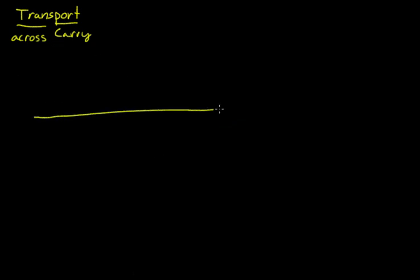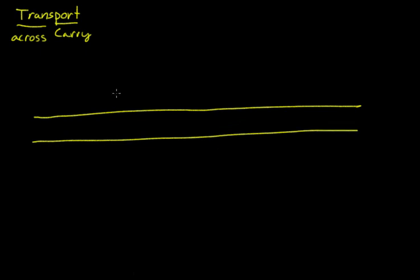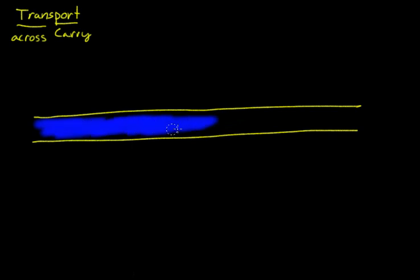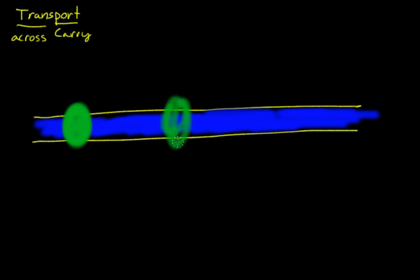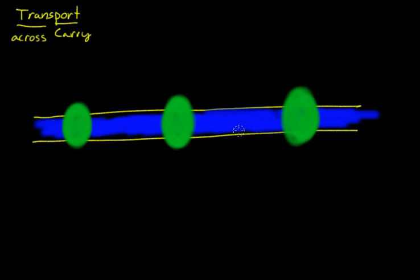So if you have a membrane, which transporters carry stuff across, we're going to fill it in with our hydrophobic area. We'll make the hydrophobic area blue. So now we'll have our transporters — one right there, one right there, and one right there.